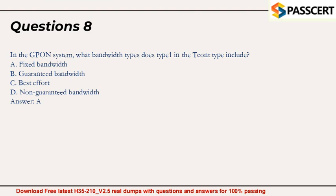Question 8. In the GPON system, what bandwidth types does type 1 in the TECA type include? A. Fixed bandwidth. B. Guaranteed bandwidth. C. Best effort. D. Non-guaranteed bandwidth. Answer: A.